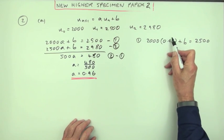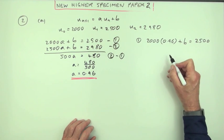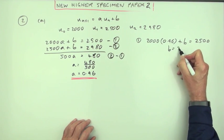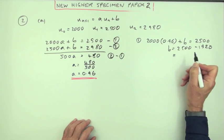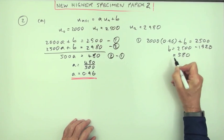So that will be 960 doubled to 1920. So B is going to be 2,500 minus that 1920, which is 580.